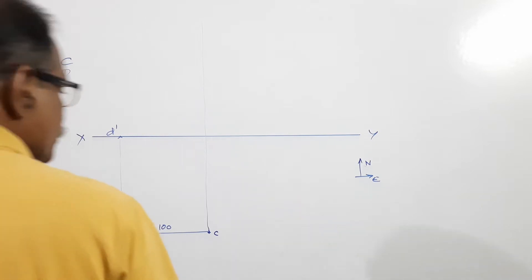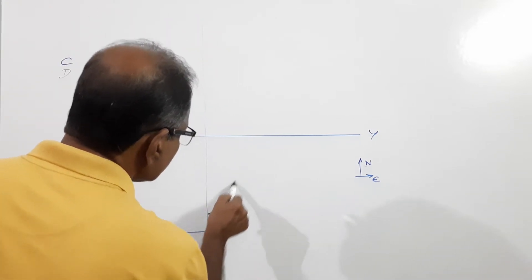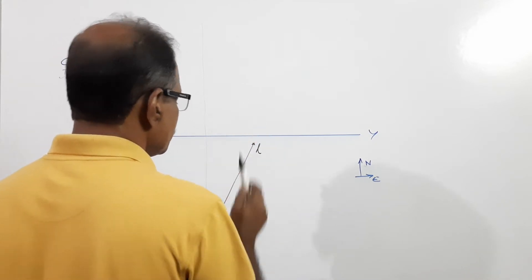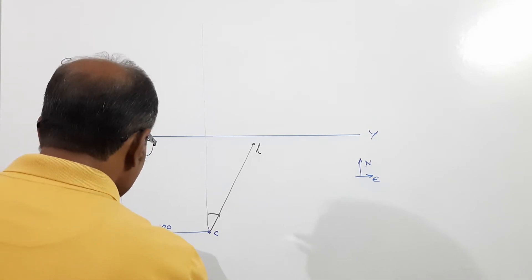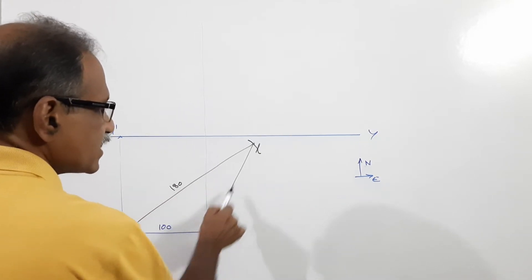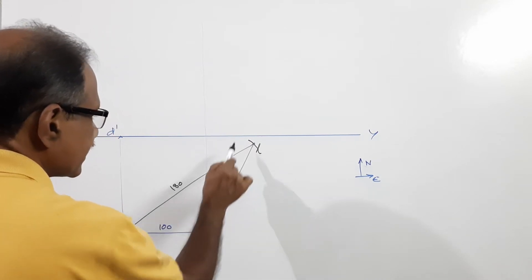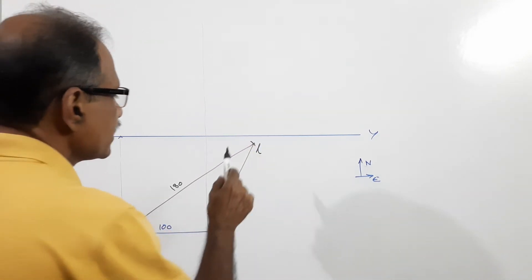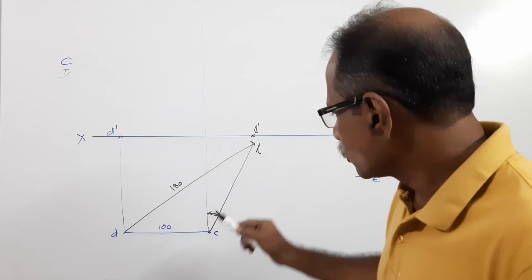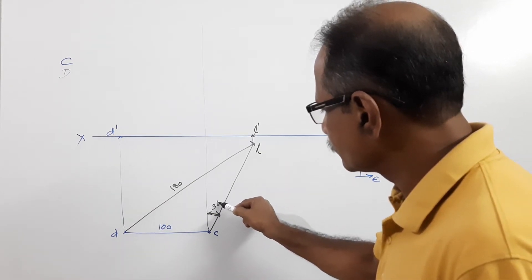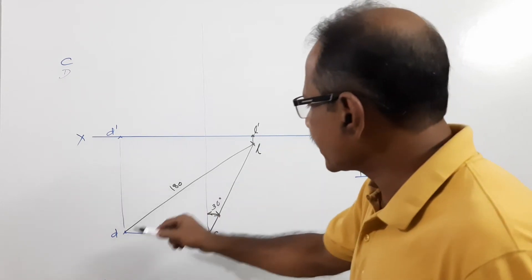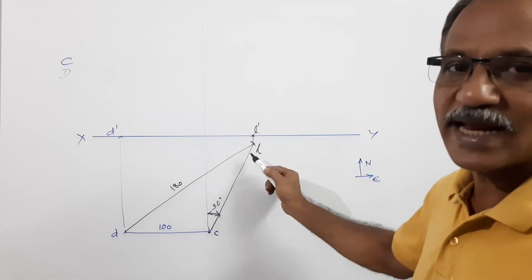I draw a line 30 degrees east of north, and somewhere on this line is the lion L. L is located by drawing an arc of 180 meters radius from D. Draw the 30-degree-east-of-north line and on that line D cuts an arc to get L — that is how L is located. If this is L, this is L dash.